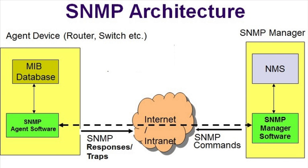When administering a corporate network, you may be in charge of thousands of devices. It's important to gather statistics from all those network devices to see how they're doing, and a great way to do that is with SNMP — the Simple Network Management Protocol. It uses UDP port 161 to make queries to devices, and can receive alerts from devices over UDP port 162.